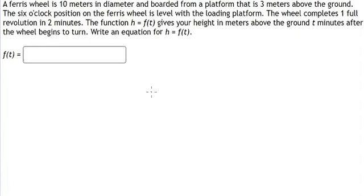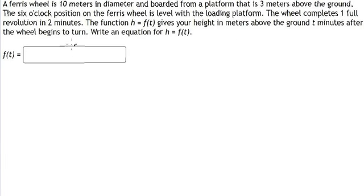Hello everybody. Today I want to talk about calculus — the topic about periods and frequencies. I want to show you how to answer this problem: we have a Ferris wheel that is about 10 meters in diameter, with a platform that is about three meters above the ground. The starting location is at six o'clock, and the wheel completes one full revolution in two minutes. We need to write the equation f of t.